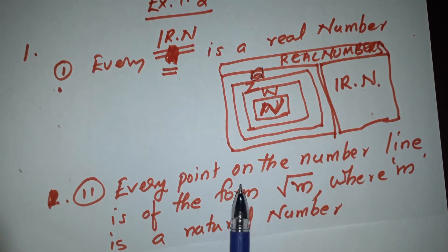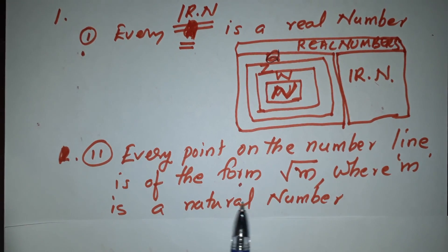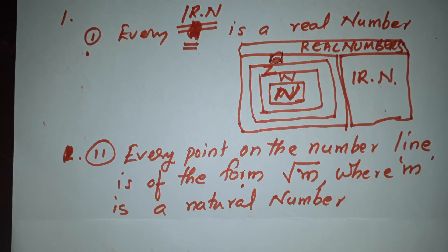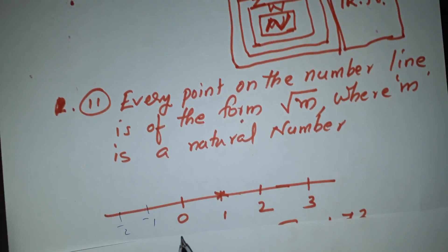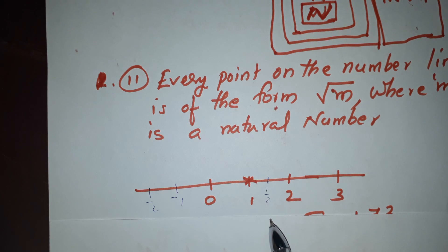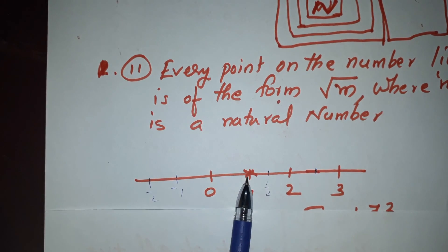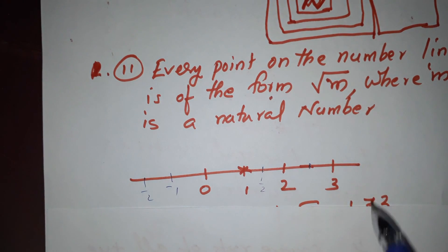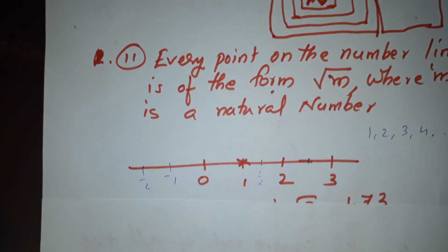Every point on the number line is of the form √M, where M is a natural number. Now there are both positive points on the number line. We have points like 0.5 and 2.5. If we write all the points as a natural number, we will write them as a natural number.